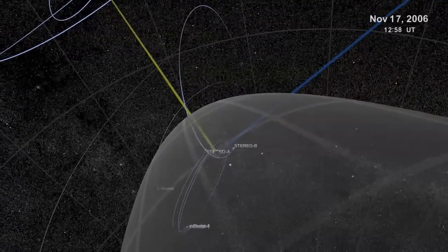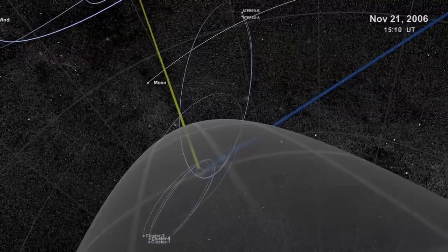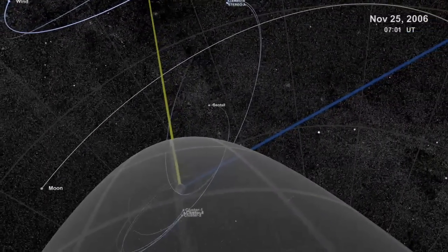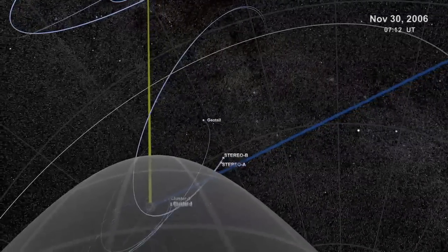The cluster vehicles are on a high, elliptical flight path. Geotail makes a lazy loop all alone. The two stereo satellites fly in relatively close formation, but they won't stay that way for long.